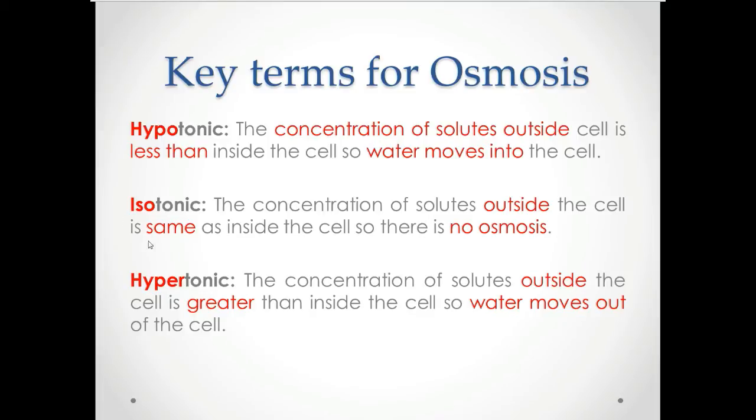Isotonic means the concentration is same, so therefore there is no osmosis. That's the simplistic term you need to remember. For hypertonic, the concentration of solutes is greater and so water moves out of the cell. You can see this because if you apply the rules of diffusion, the water would move from an area of high concentration to an area of lower concentration. And in this case, because the solution is hypertonic, it will move outside the cell because the concentration of solutes outside the cell is greater.